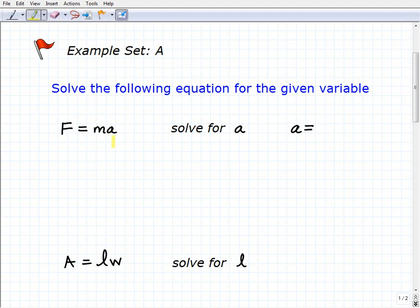To do that, if you recall, the biggest thing is we want to think of this particular variable, the one that we're solving for, as the only variable for the time being in the equation. So we're going to conceptualize F and M as numbers, if you will, and we're going to treat them as numbers as we solve for A.